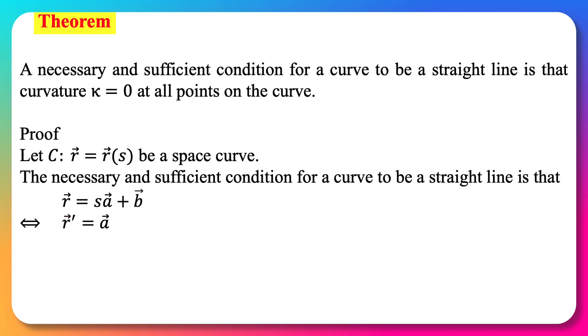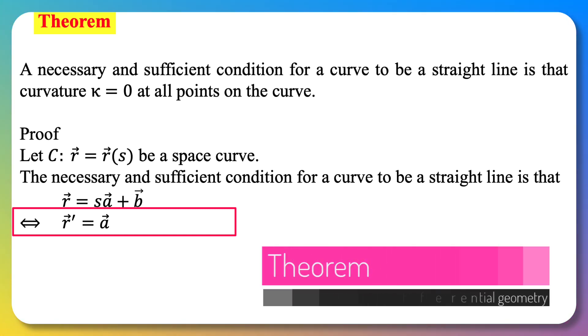Differentiating this position vector with respect to s, we get r prime equals vector a because the derivative of s is 1 and the derivative of vector b is zero because it is a constant vector.